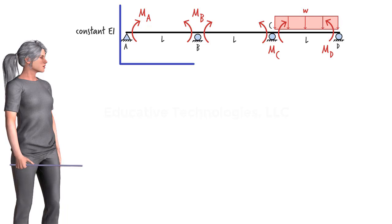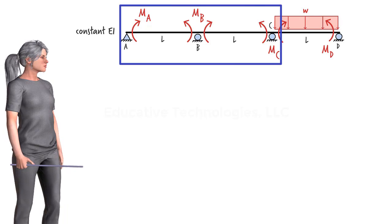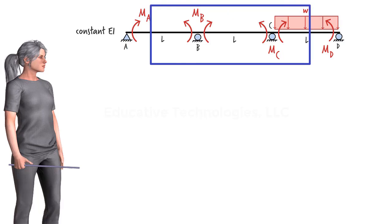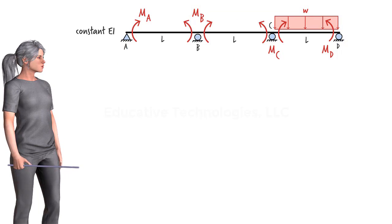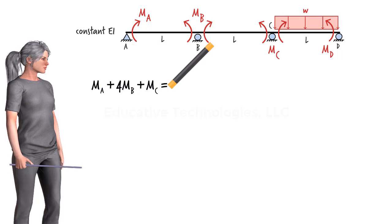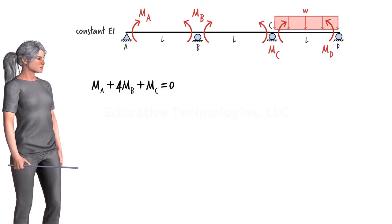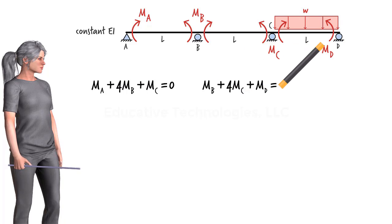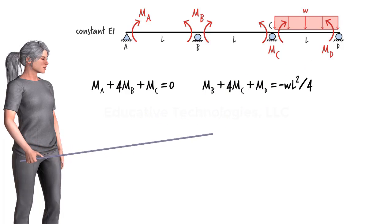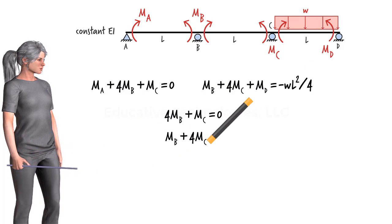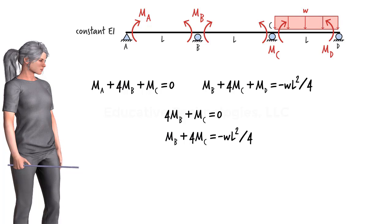We need one equation for the moments at A, B, and C, and another equation for the moments at B, C, and D. The three-moment equations for the two sets of points can be written accordingly. And since MA equals MD equals zero, these equations simplify further.